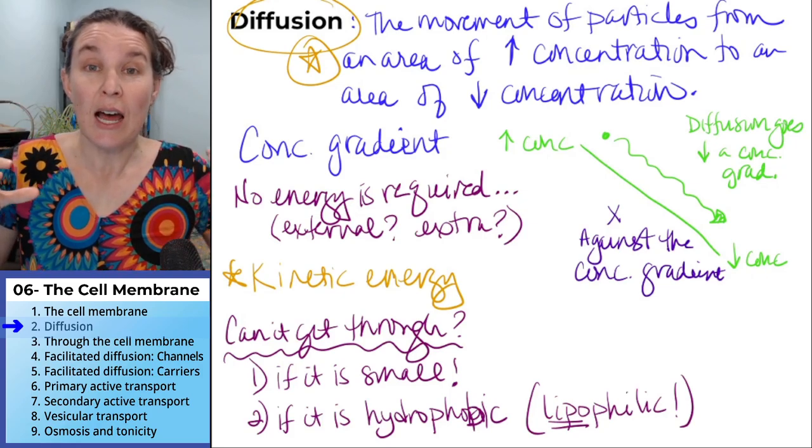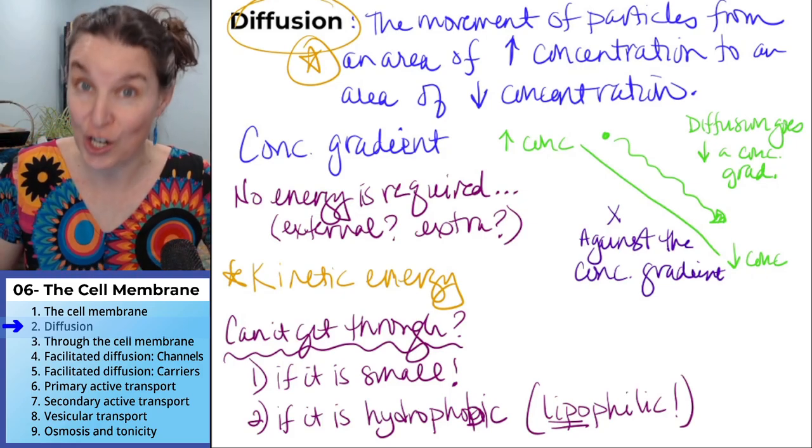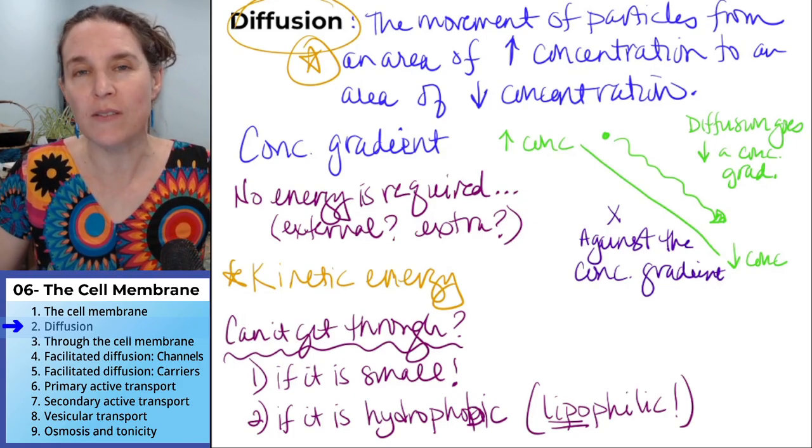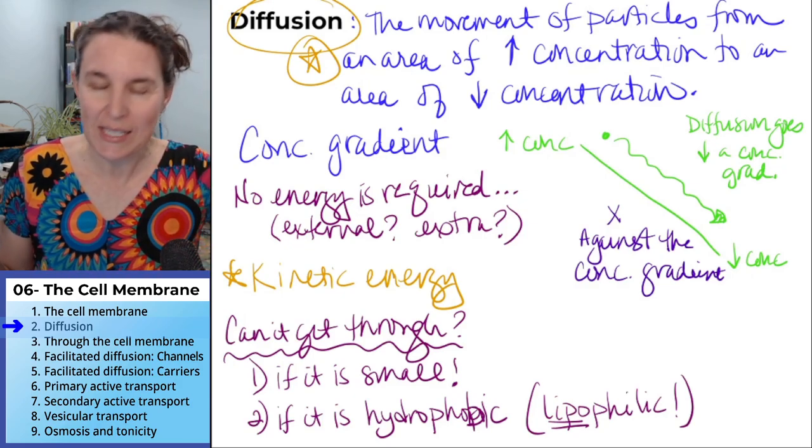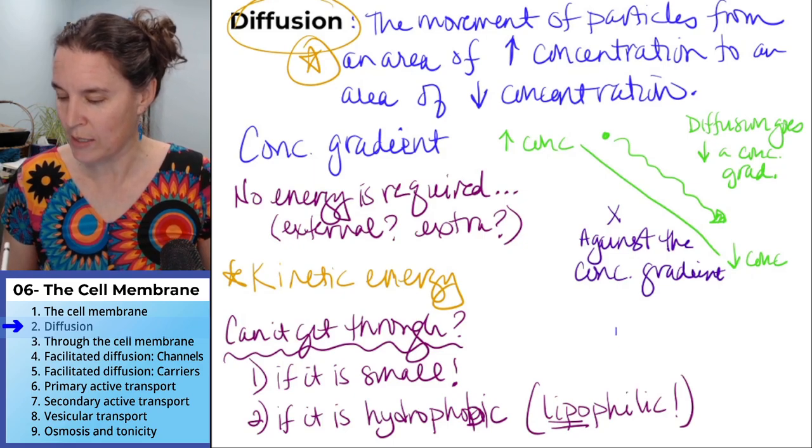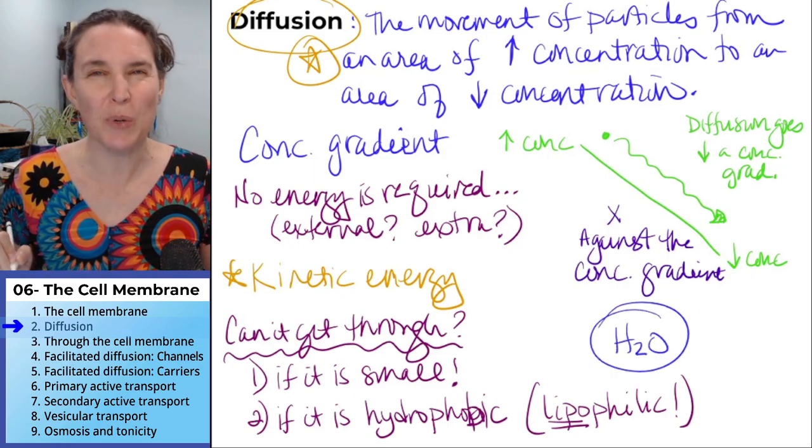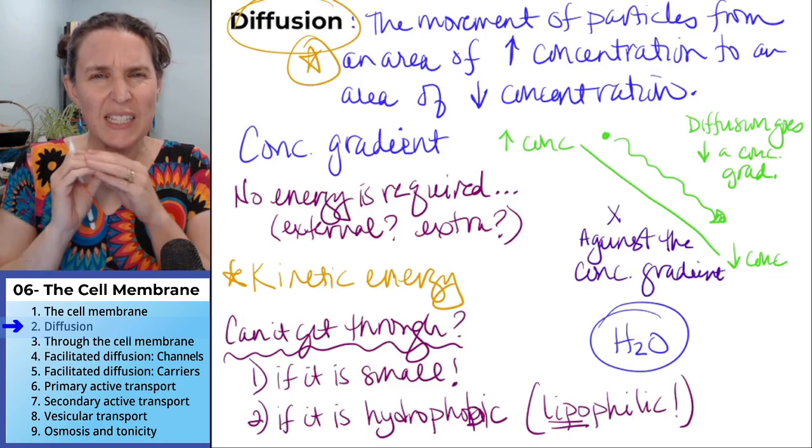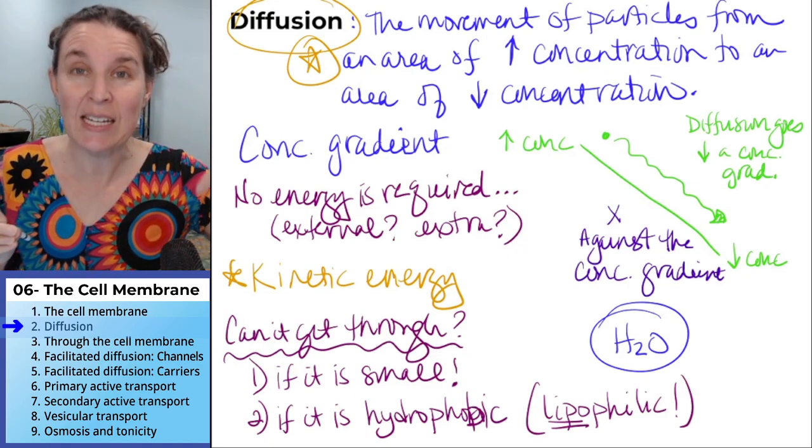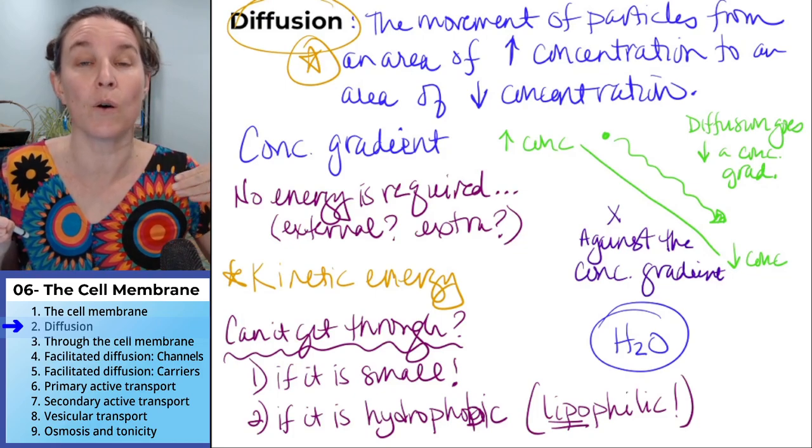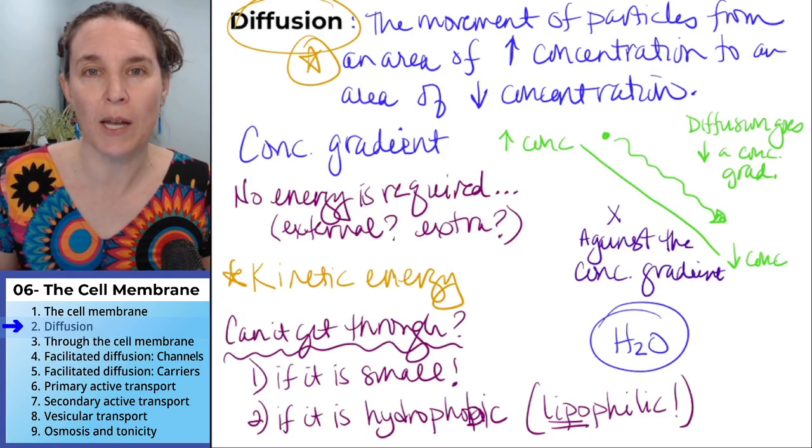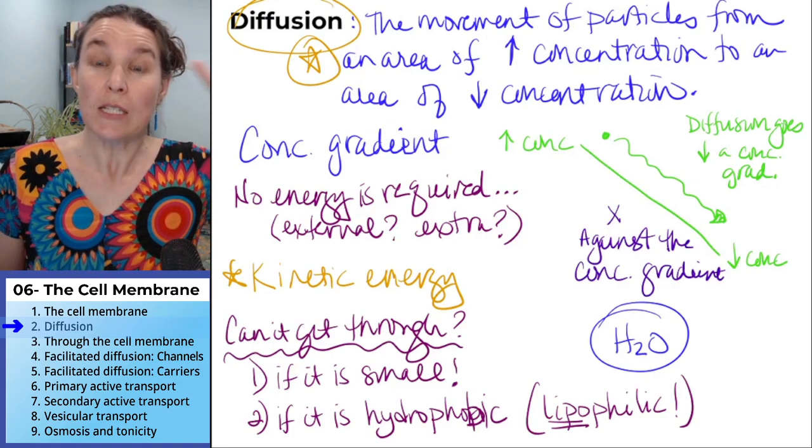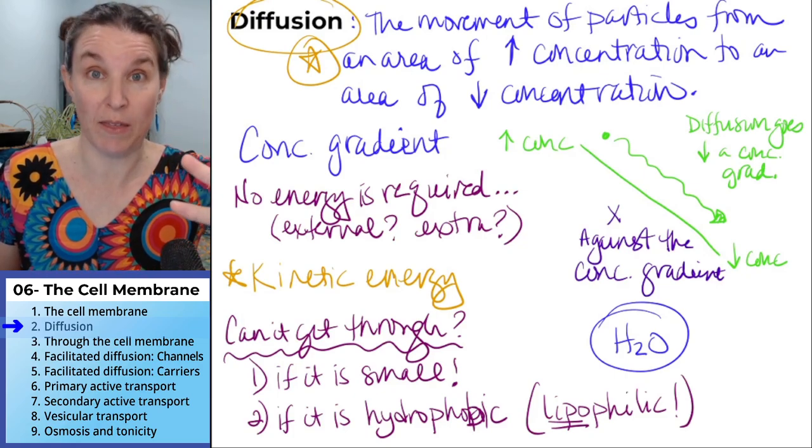If it is hydrophilic, if it has a charge, so if it's polar or charged like an ion, most of the time it can't get through. The one exception to that is somebody who is polar, but is pretty small, and that's water. Water is, we know, a polar molecule, but it's a pretty small molecule, and it can get through the cell membrane on its own. Sometimes it can use a little bit of help, and we'll talk about how water can get help through the cell membrane. But small things can get through, and hydrophobic things can get through.